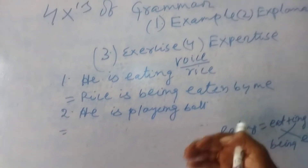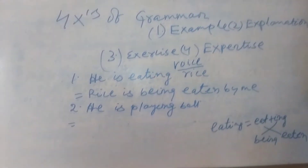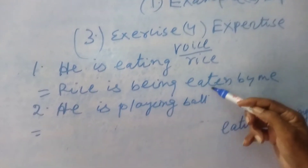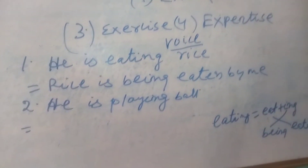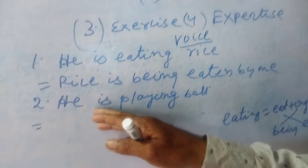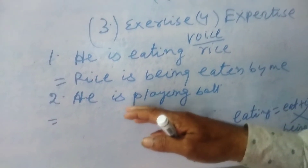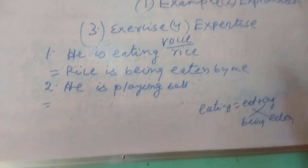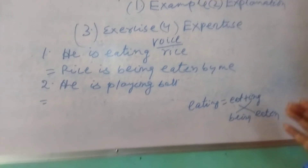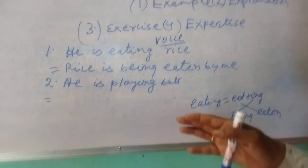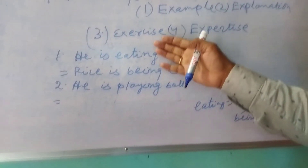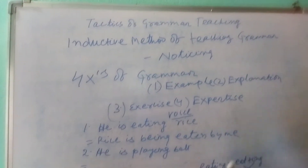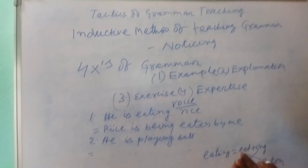You can ask the students, or may not ask them — what is the answer? They may answer, they may not. Simply write down the answer: 'Rice is being eaten by me.' Now write another sentence of this pattern in present continuous: 'He is playing ball.' Ask the class — suppose there are thirty students — how many students are following the example? If students do it, it's better. If they do not, no harm either.